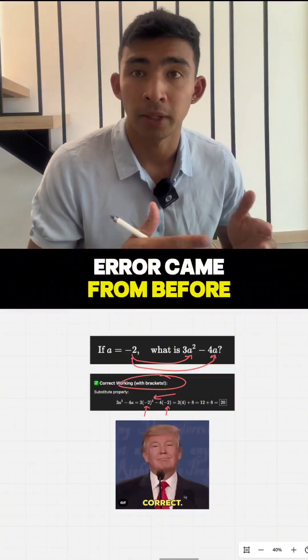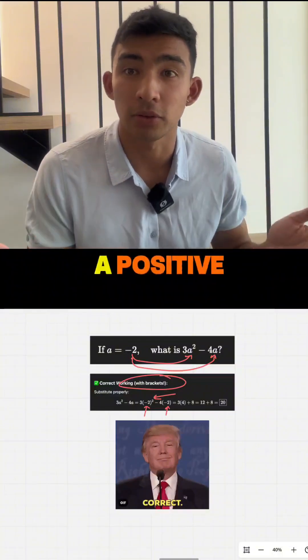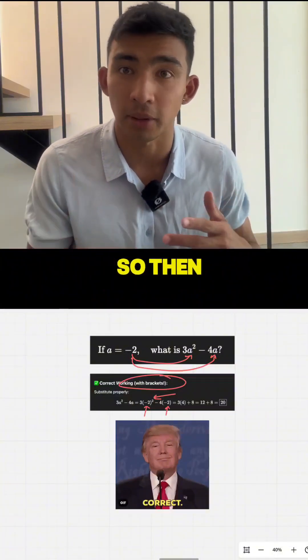So this is where the error came from before. Because minus 2 times minus 2, it should give you a positive 4 because you've got two negatives, right? Without those brackets, it screws up. So then you get the minus 4, that's why it screws up.